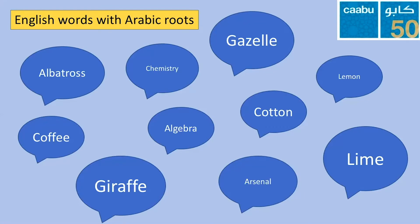And the word arsenal — we know it means a collection of weapons and military equipment — actually comes from the Arabic 'dar-sinah', meaning 'house of industry', which was usually used by the military or navy to build up and store weapons. You can find out so much more about words and names when you look at their root meanings, which helps you gain a deeper understanding of them too.